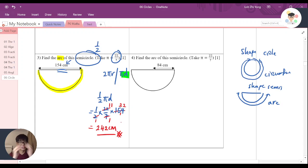Which means that if there's a semi-circle with a diameter of 154 cm, the arc of the semi-circle would be 242 cm. And that's the answer for this question.